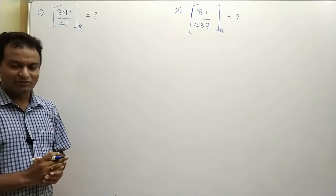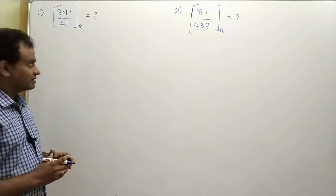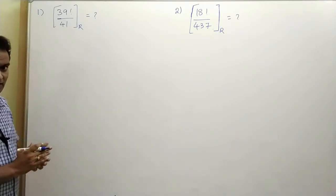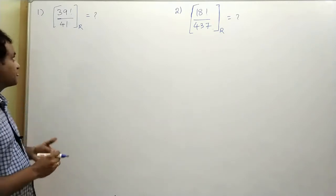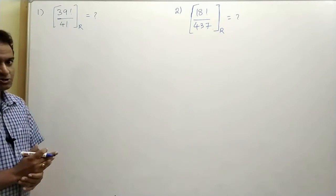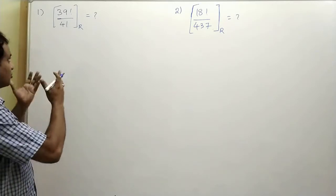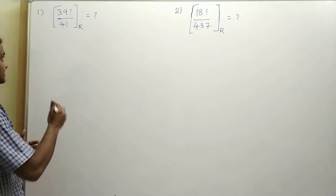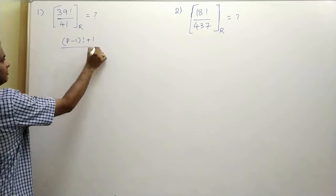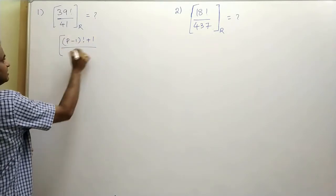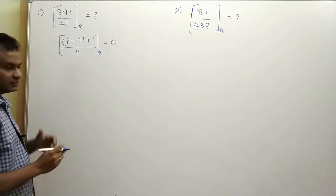In today's lecture, we are going to solve two very good questions based on factorials and divisibility. Let us have a look at the first question: when 39 factorial is divided by 41, we need to find the remainder. So which theorem do we need to apply here? We have to use Wilson's theorem when a question involves factorials. Wilson's theorem says that (p-1) factorial plus 1, when divided by p, the remainder equals 0.